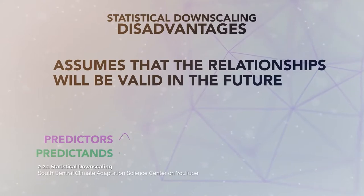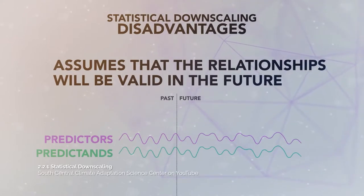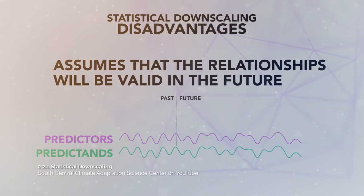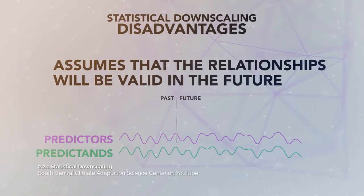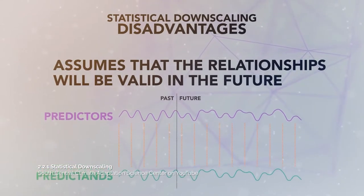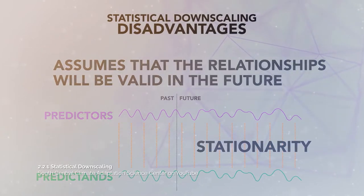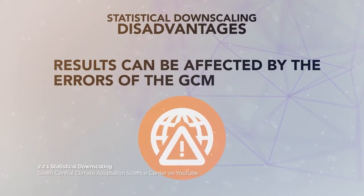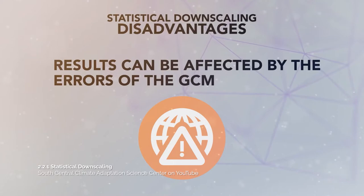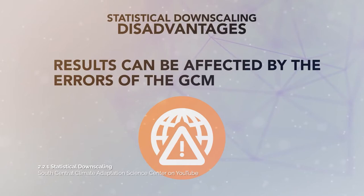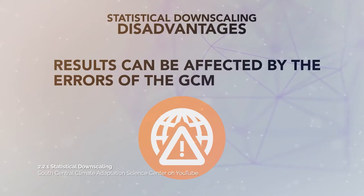Second, statistical downscaling assumes that the statistical relationships developed based on past observations and GCM output for the same period will continue to hold in the future. However, given that climate change may alter the way that climate functions, this statistical relationship may not remain consistent. Finally, results from statistical downscaling can be affected by errors in the GCM, and if the GCM has errors in a particular region of interest, those errors can spread to the results of the statistical downscaling.